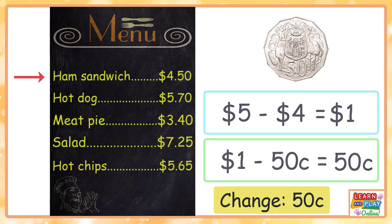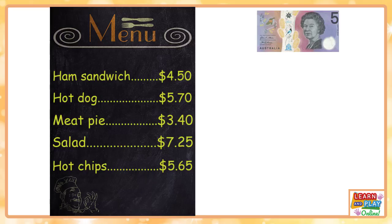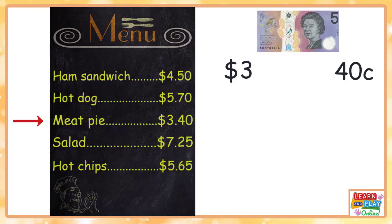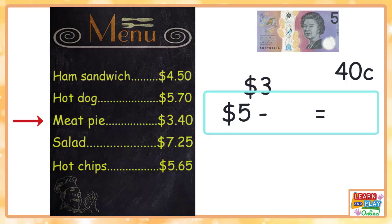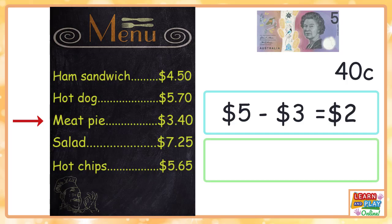Let's move on to the next one. Let's say I start with five dollars once again, but this time I'm going to buy a meat pie. The meat pie is three dollars and forty cents. Again, let's separate the dollars and the cents. Starting with the dollars: five dollars minus three dollars will leave us with two dollars.